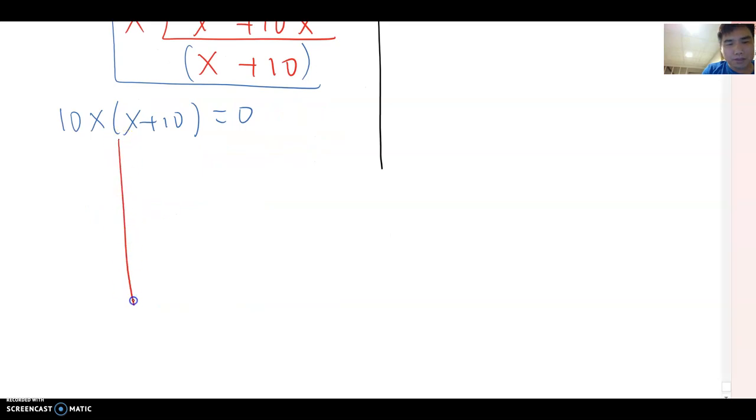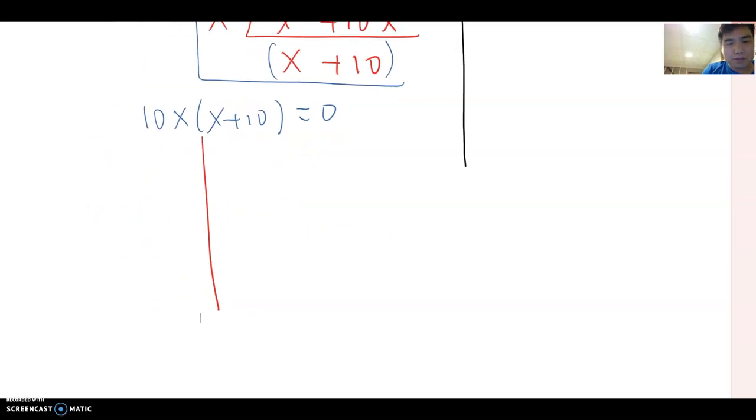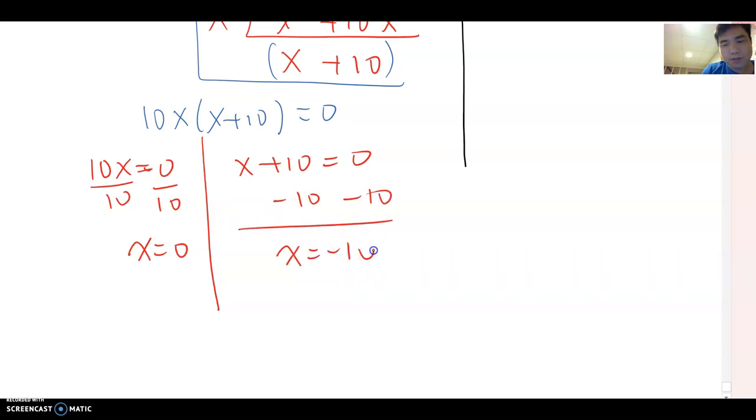You can make 10x equals 0 or x plus 10 equals 0. And divide by 10. So, x equals 0 and minus 10. Then, x equals negative 10. Therefore, this equation answer is x equals 0 or x equals negative 10.